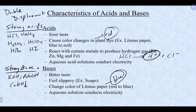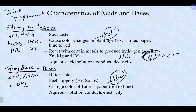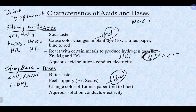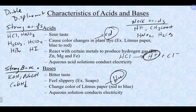If an acid is not on the strong acid list, it's safe to assume it's a weak acid. Common weak acids include hydrofluoric acid, acetic acid, nitrous acid, and carbonic acid. The most common weak base is NH3, ammonia, which you see a lot in chemistry.